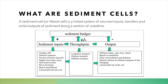A sediment cell is a linked system of sources or inputs, transfers, and sinks and outputs. It basically regulates a section of a coastline and all of the sediment along that coastline — where it comes from, how it moves, and where it ends up.